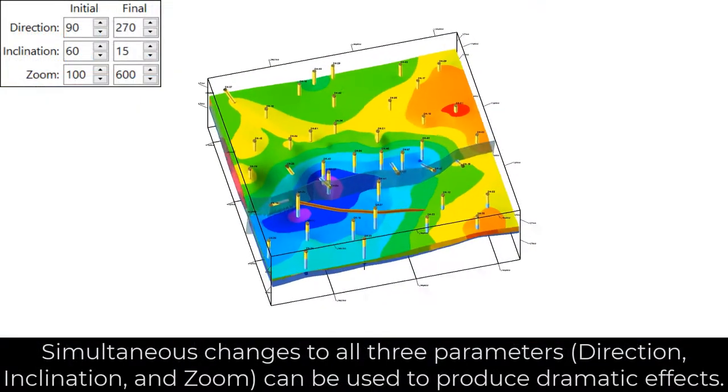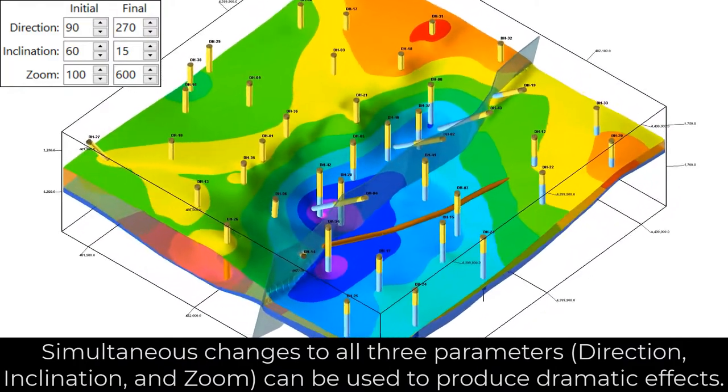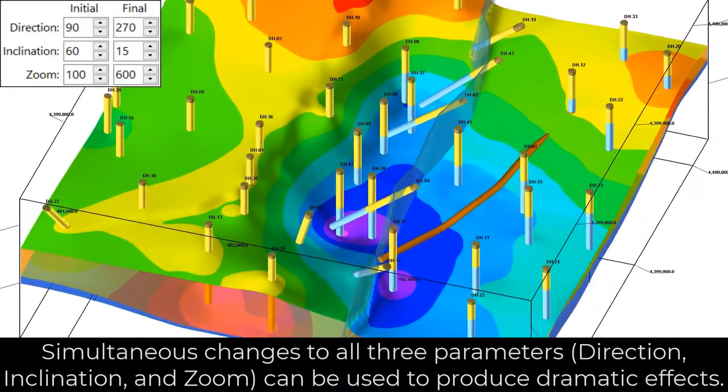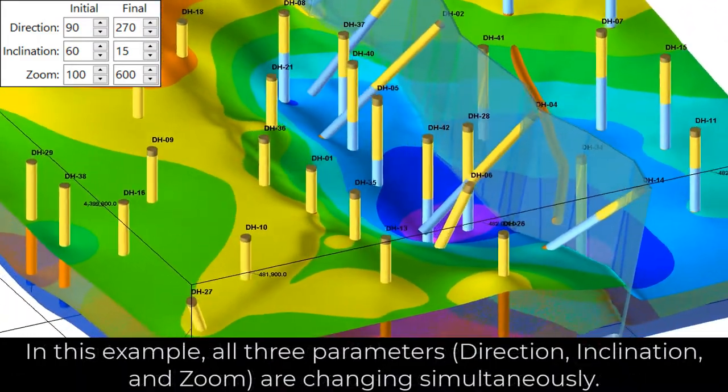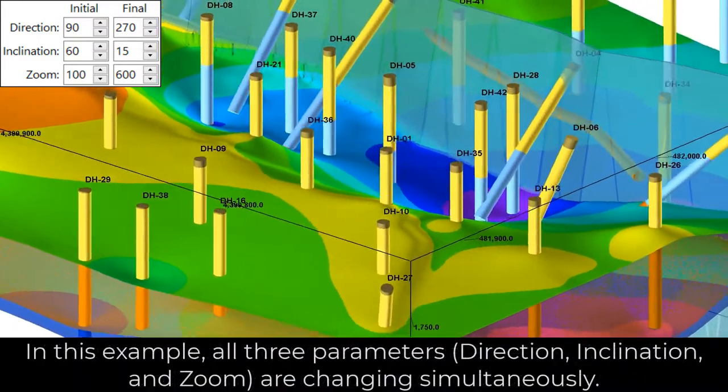Simultaneous changes to all three parameters—direction, inclination, and zoom—can be used to produce dramatic effects. In this example, all three parameters are changing simultaneously.